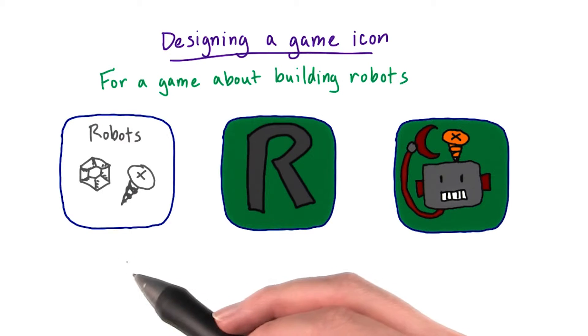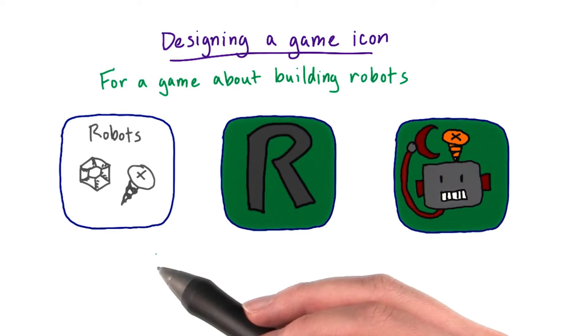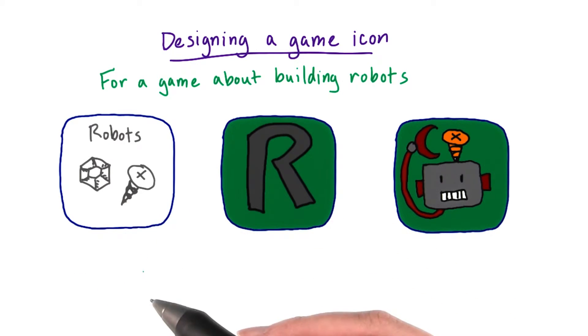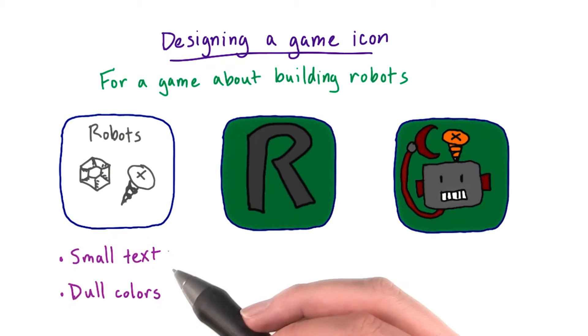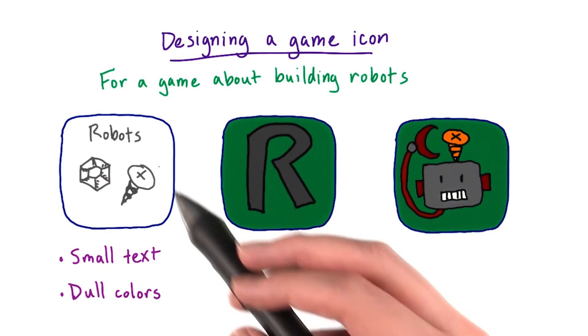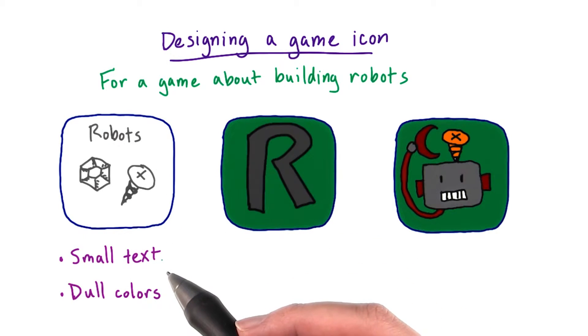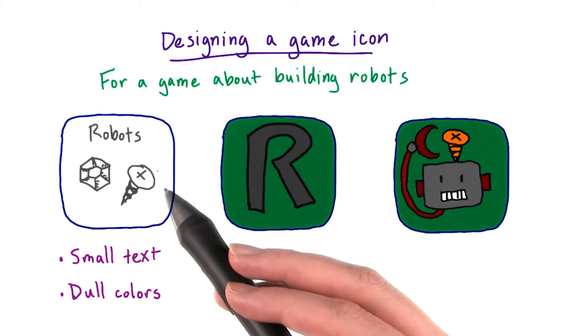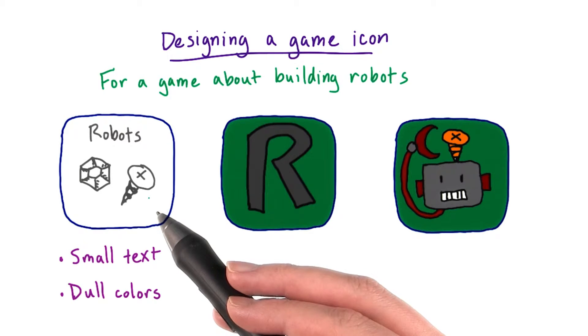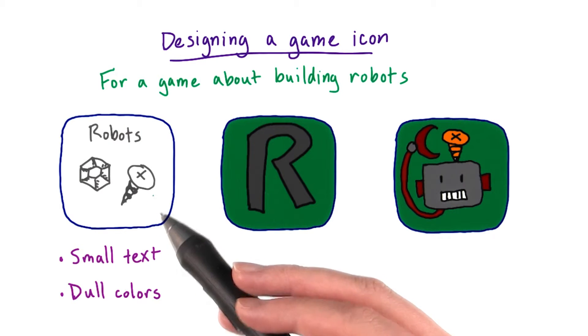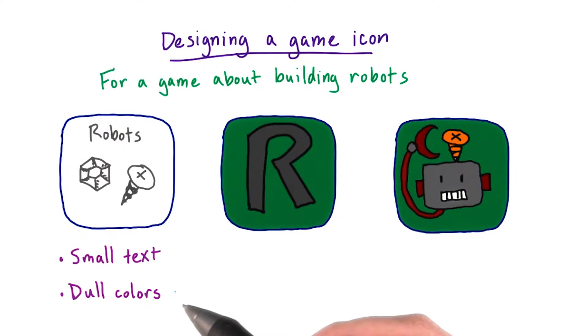Our first choice is a picture of nuts and bolts that says 'Robots' on it, and this one is not very good. I don't think I'd be able to read the label if it gets any smaller, like if it's displayed on my phone, and the colors aren't very eye-catching.